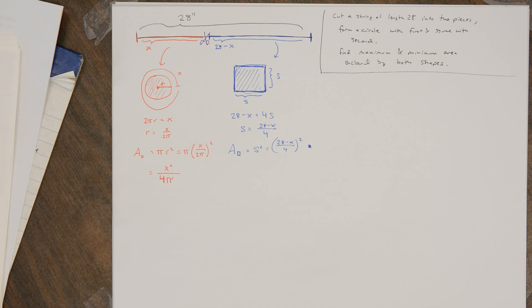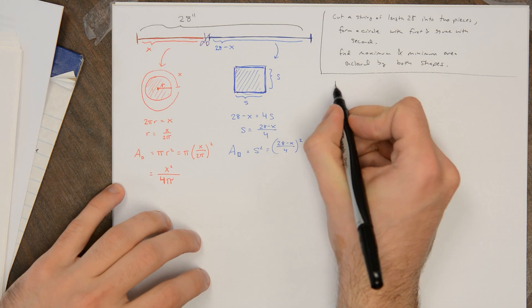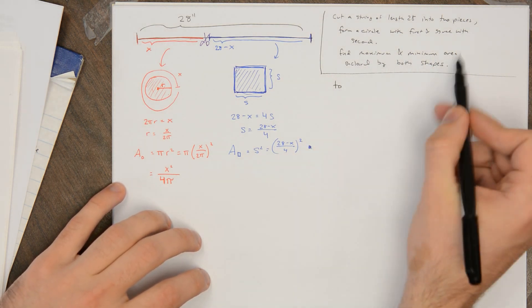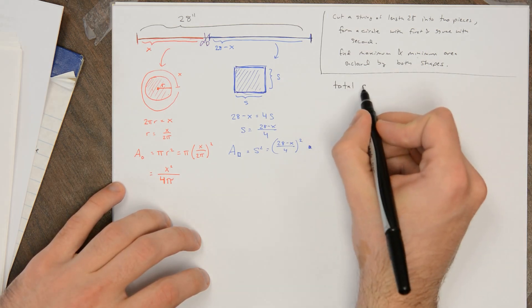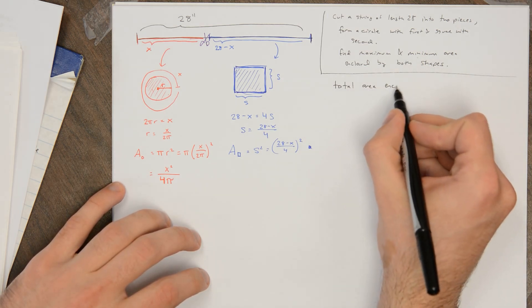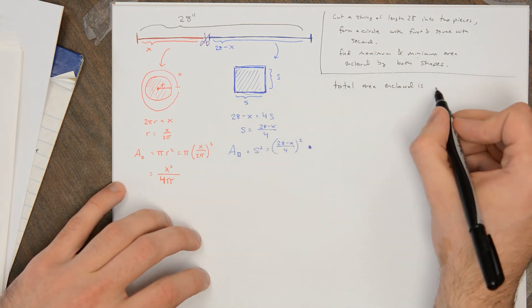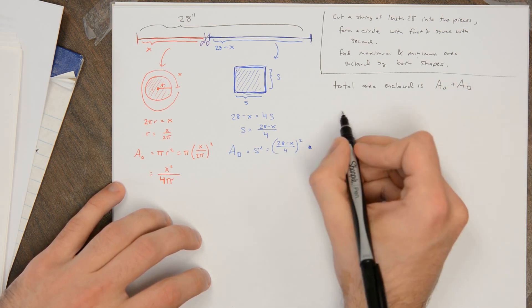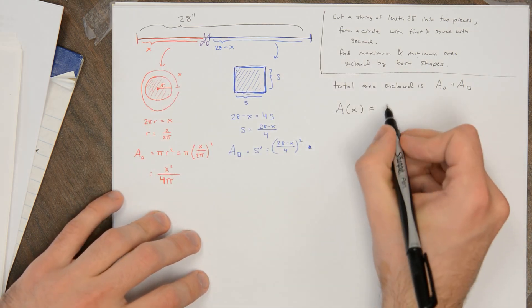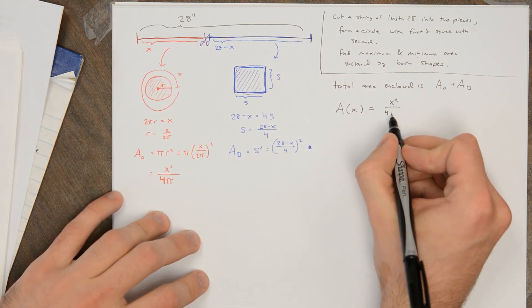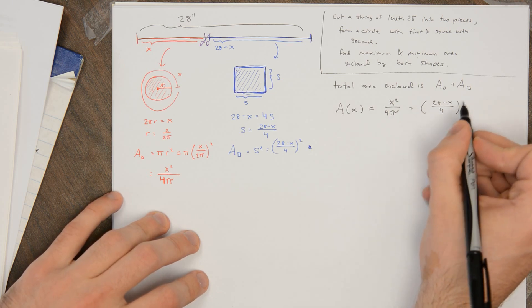So the total area enclosed is the sum of the area enclosed by the circle and the area enclosed by the square. And that's the function I want to optimize. I want to find both the absolute max and absolute min. So the total area enclosed is the area of the circle plus the area of the square. This is a function just of x, the length of the first piece of string. So x²/4π + ((28 - x)/4)².